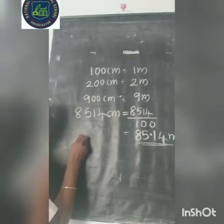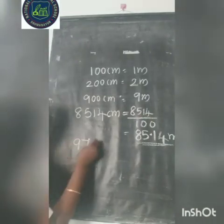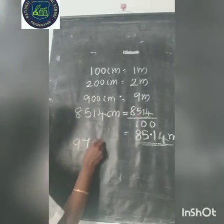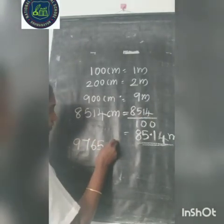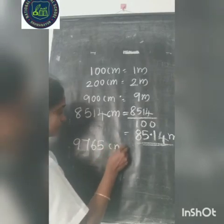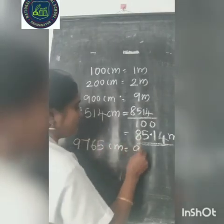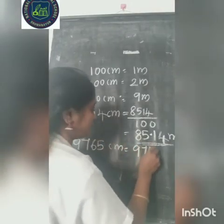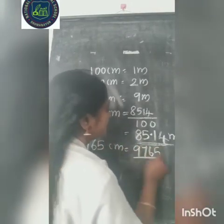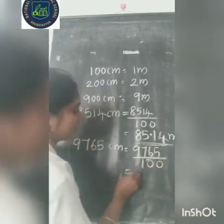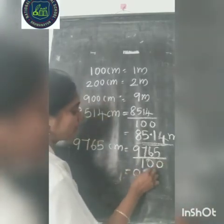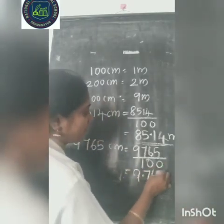One more question: 9,765 centimeter. 9,765 divided by 100 equals 97.65 meter.